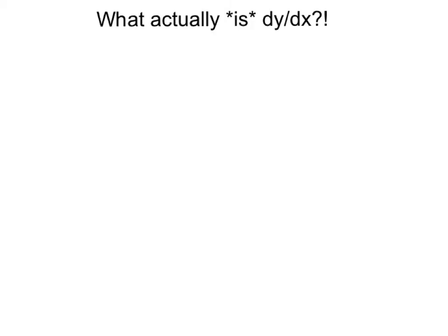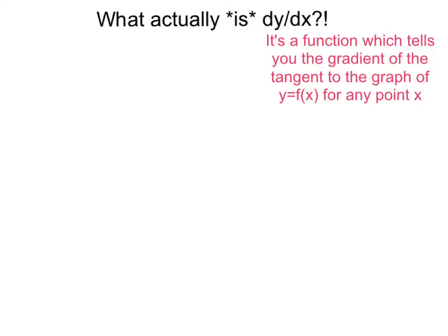In this video I'm going to answer the question: what actually is dy by dx, other than the basic answer that it's a function which tells you the gradient of the tangent to the graph of y equals f of x for any point x? We know that, but what actually is it and where does it come from and why do you pull the number down and take one off?